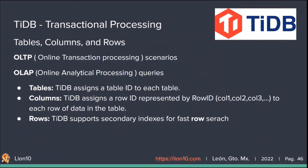For columns, TiDB assigns a row ID to each row of data in the table. The row ID is also an integer, unique within the table. TiDB has made a small optimization: if a table has an integer-type primary key, TiDB uses the value of that primary key as its row ID. So essentially, each column is represented by an ID.